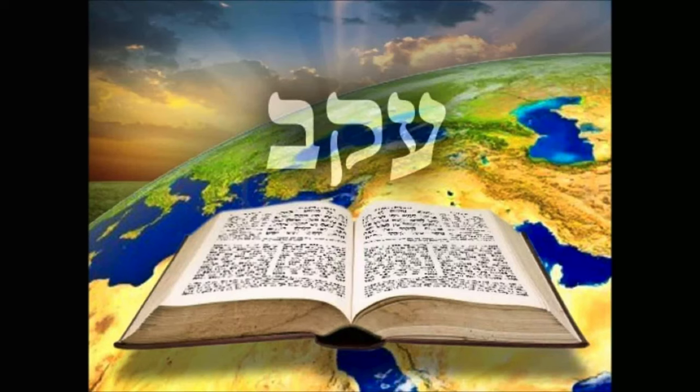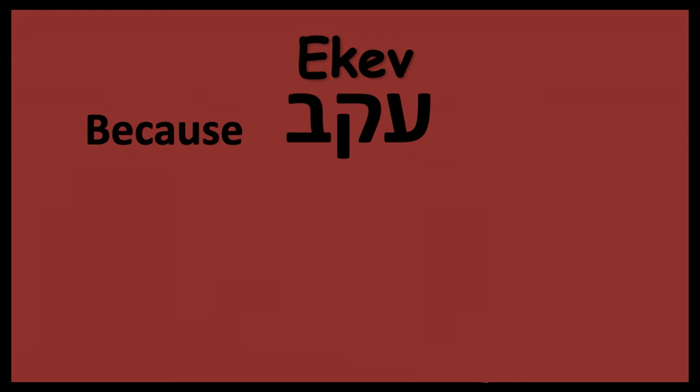What's the name of the Torah portion? Ekev. What's that first letter on the right? Ayin, and then koof, and then the bet or vet. And what does Ekev mean? It means 'because,' but it can also mean 'if.'